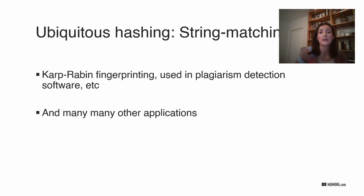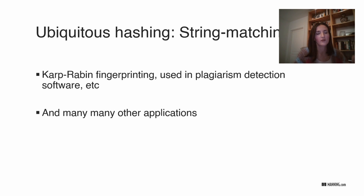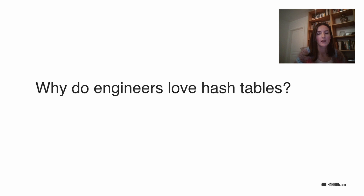In deduplication, a string hashing algorithm is used, which is Karp-Rabin fingerprinting. This is one of the fastest string matching algorithms, and part of the reason is that it uses hashing. Instead of comparing actual substrings, it compares hashes of substrings. Karp-Rabin is a randomized, really fast string matching algorithm.